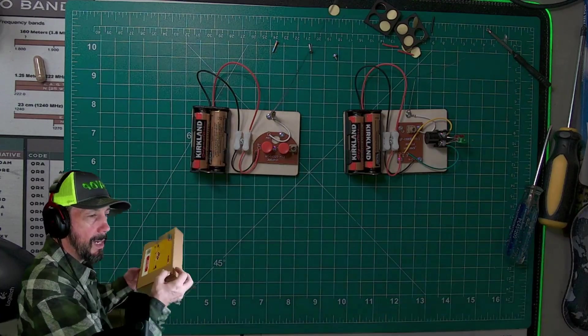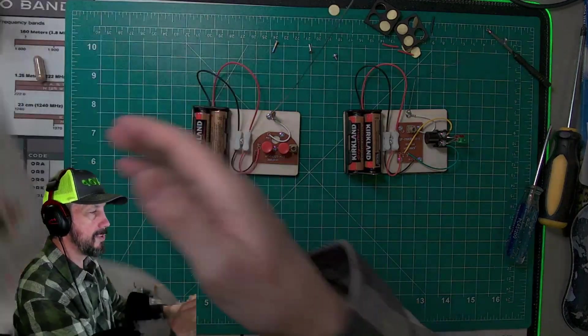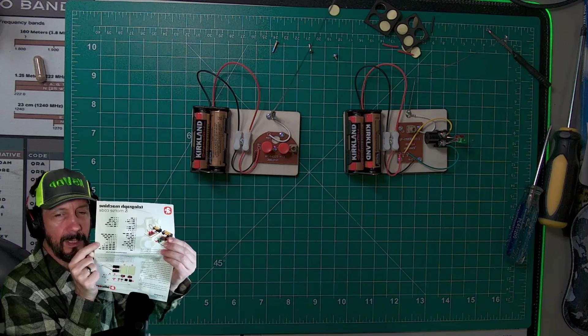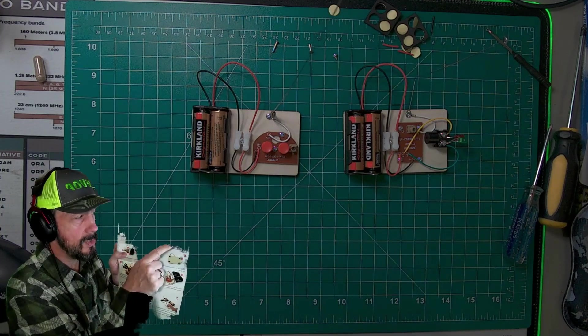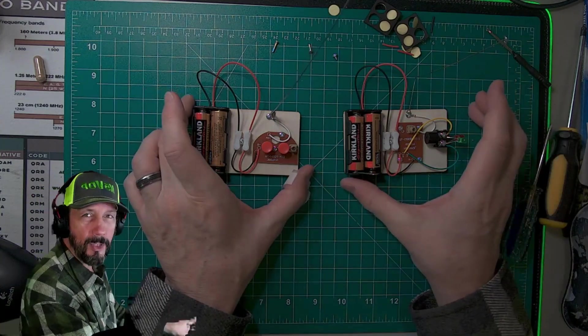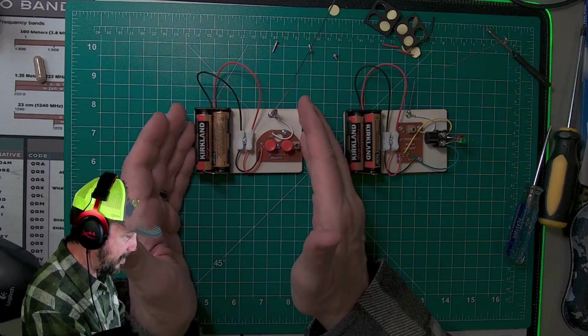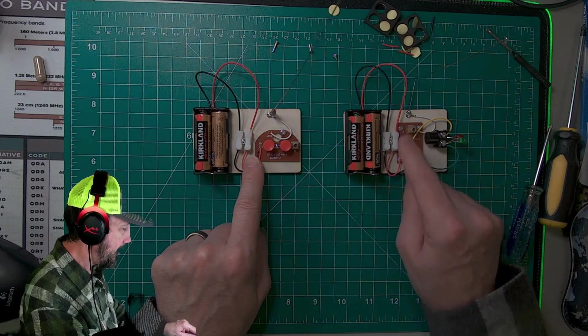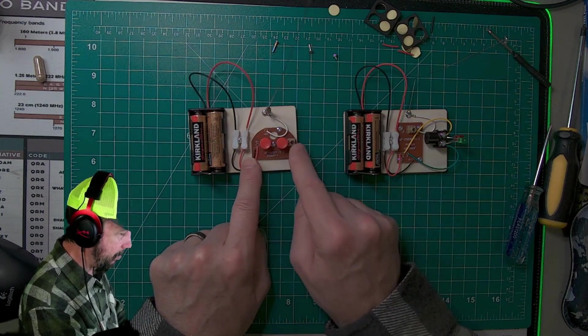The kit does come in a box and some good instructions. It even has the Morse code alphabet here to help you learn and practice. Back has the instructions, but the instructions only really show the first board. So I'm going to go through both boards. First of all, you've got a transmitter and a receiver.